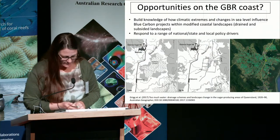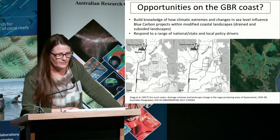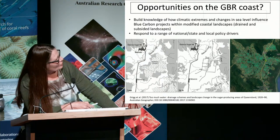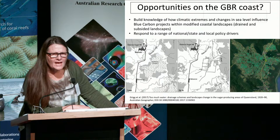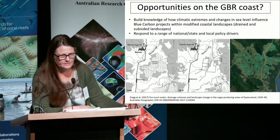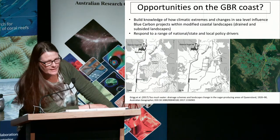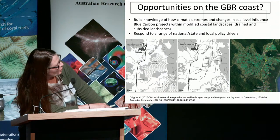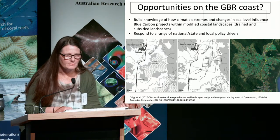Another opportunity is the drainage of the landscape. A recent paper documents the drainage of Queensland for sugarcane production — there are about 40,000 kilometres of drains in North Queensland. These drains are really potent emitters of greenhouse gas.